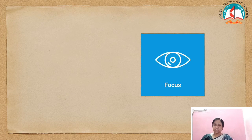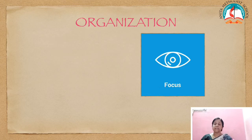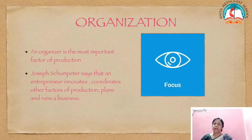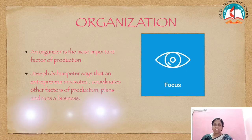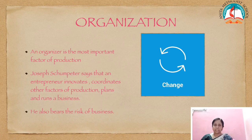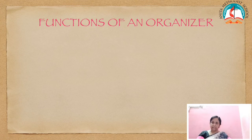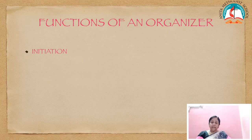The next factor of production is organization. The man behind organizing the business is called the organizer or entrepreneur. Organization is the most important factor of production. According to Joseph Schumpeter, an entrepreneur innovates, coordinates other factors of production, plans and runs the business, and also bears the risk of the business. His reward is residual — it may be profit or loss. Let us learn the functions of an organizer. Initiation: an organizer is the initiator of the business by considering the situation, the availability of resources, and planning the entire process of business or production.